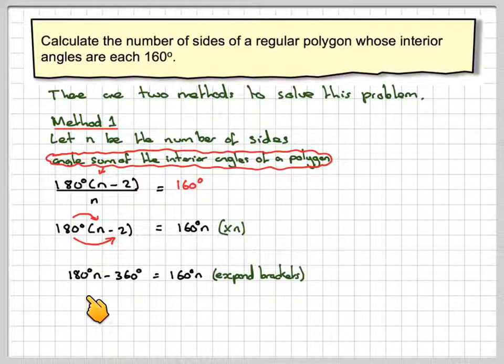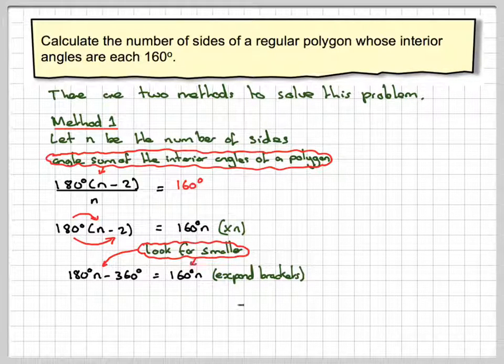Now we look at 160n and 180n to see which one is the smaller. And this one is the smaller. So the opposite thing now is to take minus 160n. So 180 take away 160n will give me 20n.